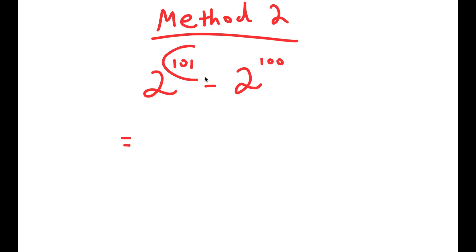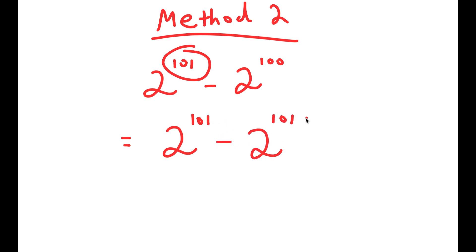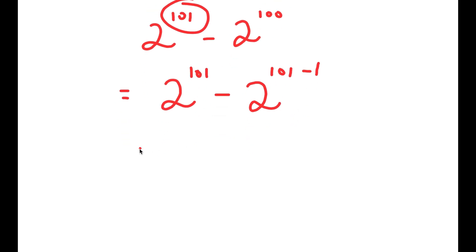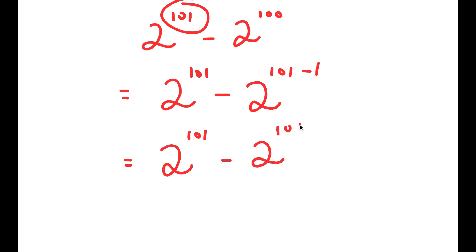Before, I rewrote 101 as 100 plus 1, but how about I rewrite 100 as 101 minus 1? So now I get 2 to the power of 101 minus 2 to the power of 101 minus 1, which is the same thing as 2 to the power of 101 minus 2 to the power of 101 plus negative 1.